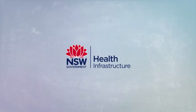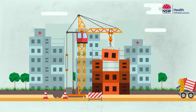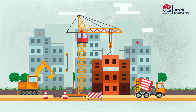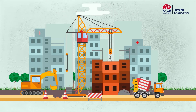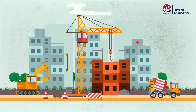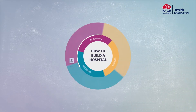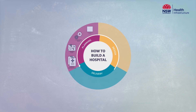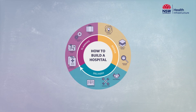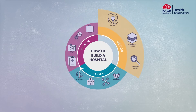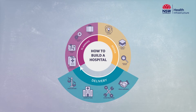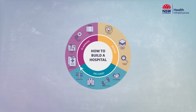Here at Health Infrastructure, we manage the Capital Works Program for NSW Health, overseeing health service redevelopments valued at $10 million and above. Every redevelopment undergoes three distinct phases – planning, design and delivery. This comprehensive process ensures our redevelopments meet the future health needs of the local community and staff.